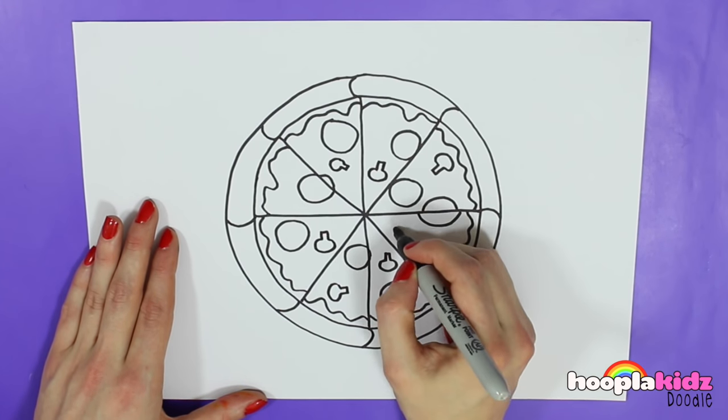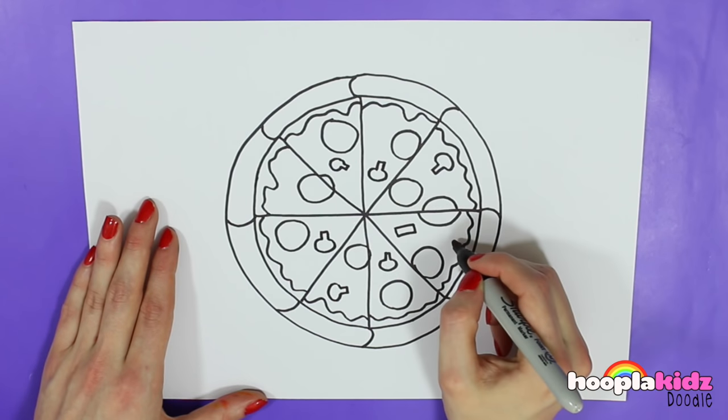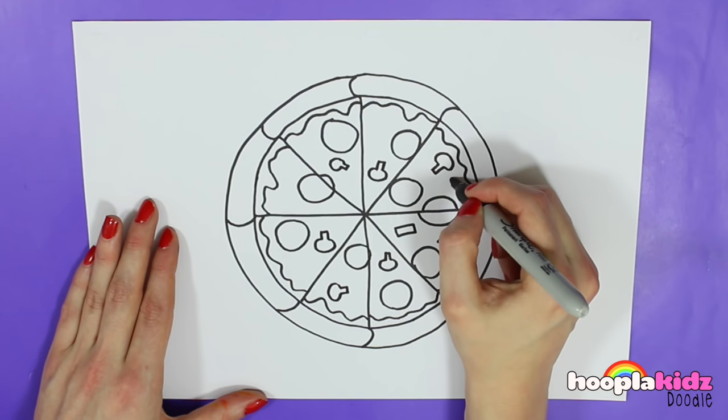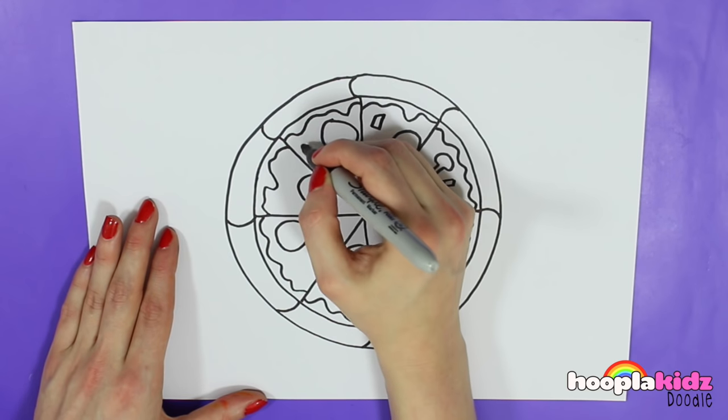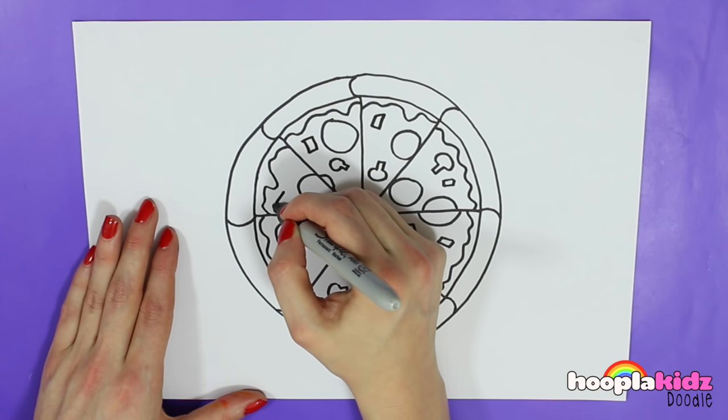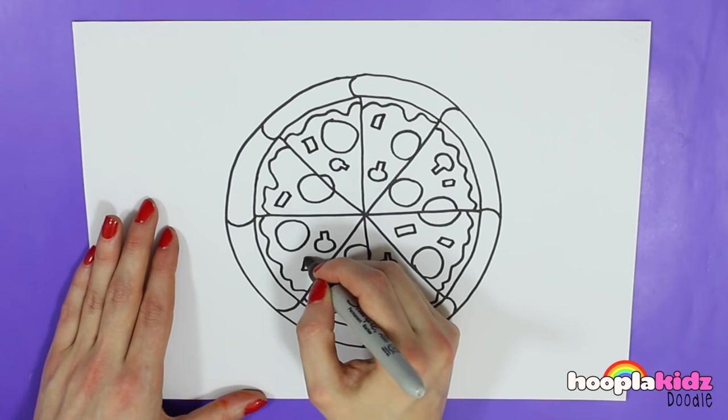I think I'll pop some other shapes on too. I've gone for some little squares. I think these could be a different kind of meat or maybe a little vegetable.